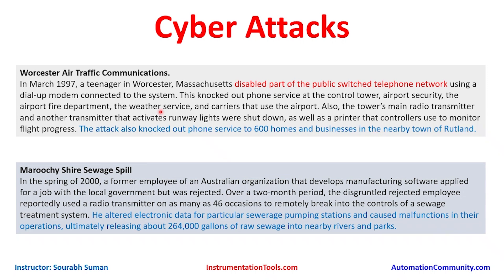The impact of this attack was that phone service was knocked out for 600 homes and businesses in the nearby town of Rutland. Just a teenager with basic knowledge caused such a big impact. This happened in a very old time — 1997 — and it was one of the first types of attacks with such a significant consequence.